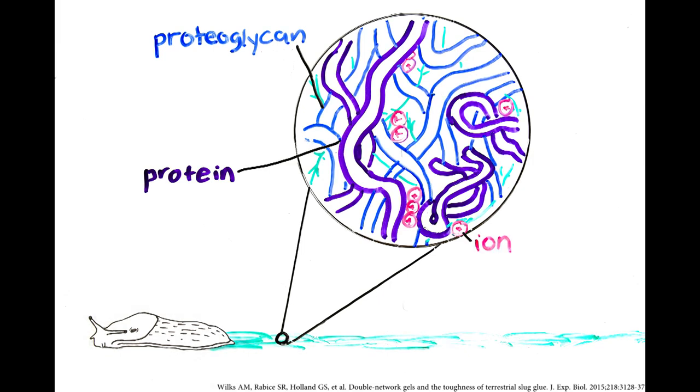Proteoglycans are proteins with long polysaccharide chains attached to them, and are commonly found in cartilage. In slime, they tangle to form a soft, deformable network with a net negative charge.